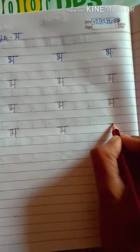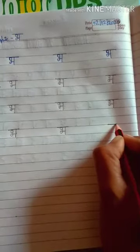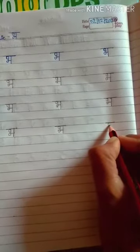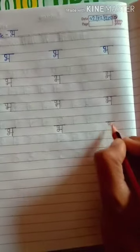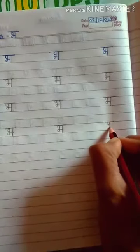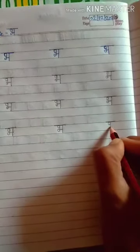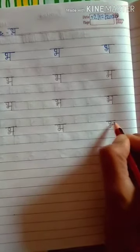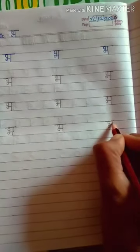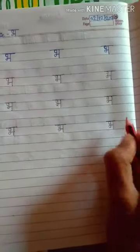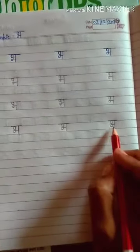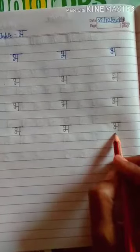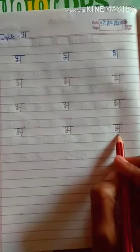Repeat again. First of all, draw sleeping line upside. Then draw a small circle. Then draw a standing line. Then draw lapker. Then draw sleeping line. Then draw standing line. Which letter is this? This is letter Bha. Kaunsa akshar hai yeh? Bha akshar hai. Repeat again.